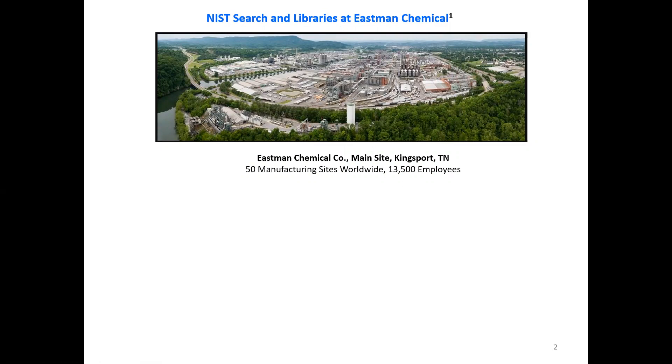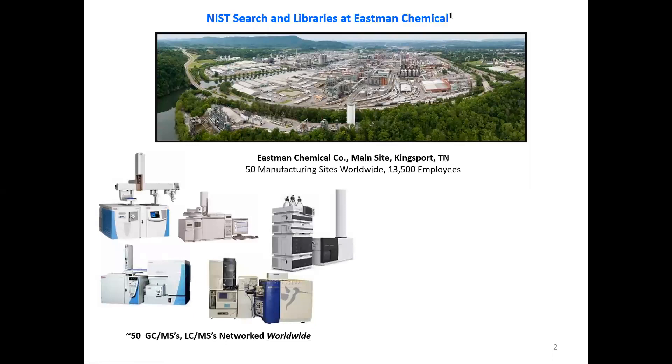We use the NIST search at all of our operations worldwide at Eastman Chemical Company. The main site is in Kingsport, Tennessee, whose picture is shown above, but we have 50 manufacturing sites worldwide with a total of 13,500 employees.